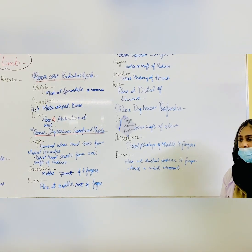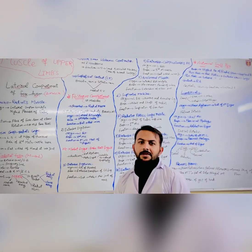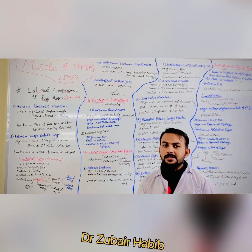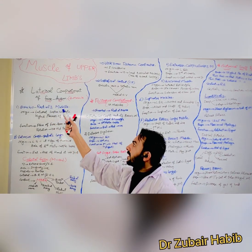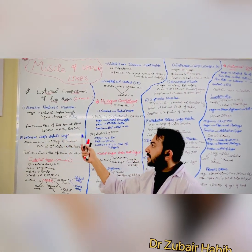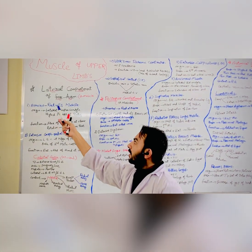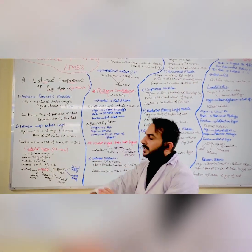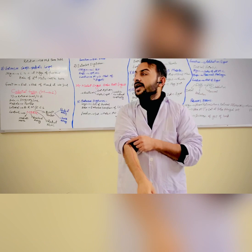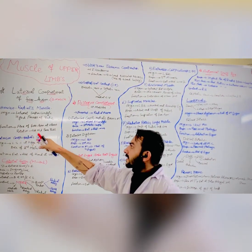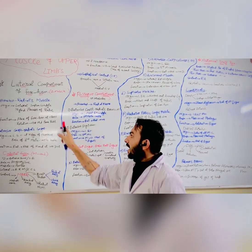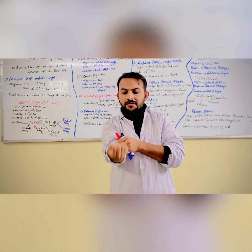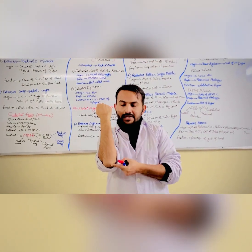My name is Naviv, and today my topic is the lateral compartment. In this lateral compartment there are two muscles: one is the brachioradialis and the second is the extensor carpi radialis longus. The brachioradialis originates from the lateral supracondylar ridge of the humerus. Its insertion is the styloid process of the radius.